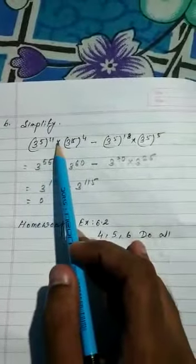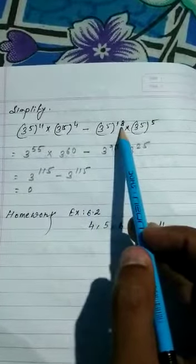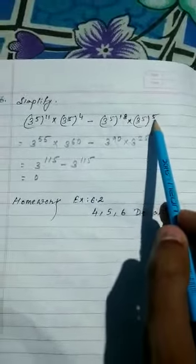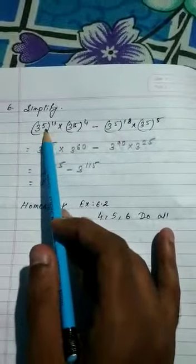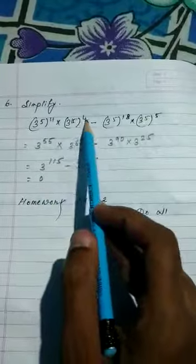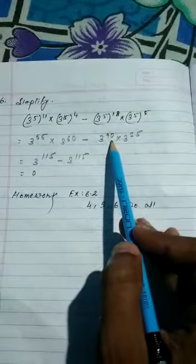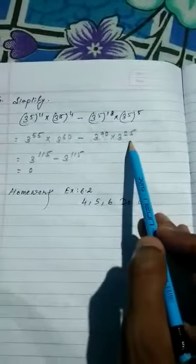Next, simplify: 3 to the power 5 whole to the 11 times 3 to the power 5 whole to the 4 minus 3 to the power 5 whole to the 18 times 3 to the power 5 whole to the 5. So whole power means you have to multiply. So 3 to the power 55, 3 to the power 60 minus 3 to the power 5 times 18 is 90, times 3 to the power 25.